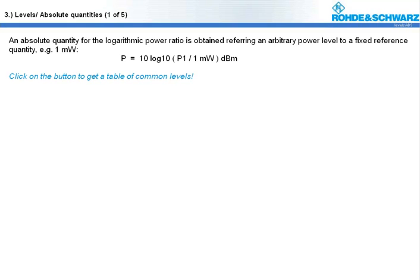Let's have a look at an example. A level of 10 dBm means a value which is 10 dB above 1 milliwatt and a level of minus 17 dB microvolt means a value which is 17 dB below 1 microvolt. Click on the buttons to see a table of common levels and their application.